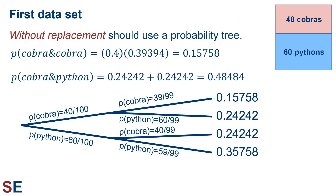Things are a little more complicated if we do sampling without replacement. In this case, we should use a probability tree. To calculate the probability of choosing two cobras, we go to the left side of the tree and follow the branch for the probability of choosing a cobra, which gives us 40 divided by 100, which is 0.4. Then for our second branch, we follow the probability of choosing a cobra, which gives us 39 divided by 99, which is 0.39394. Multiplying those two values gives us a probability of choosing a cobra and a cobra of 0.15758.